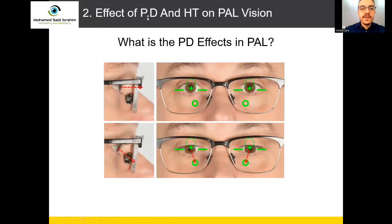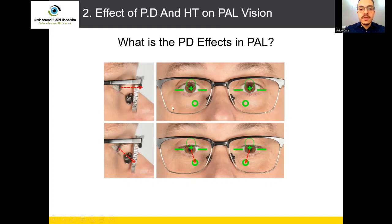The second topic is the effect of BD and height on progressive vision. PAL is the progressive addition lens. What is the BD effect in the progressive lens? We will talk more about height and BD.